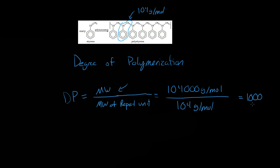A degree of polymerization of 1,000 is actually really low. Usually you'll see it in the tens of thousands — twenty thousand, thirty thousand — and it can even be in the hundreds of thousands, though that's really high. So that is the degree of polymerization: just how many monomers are in the polymer.